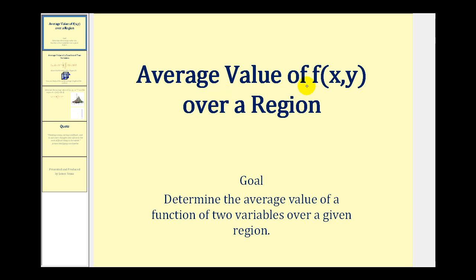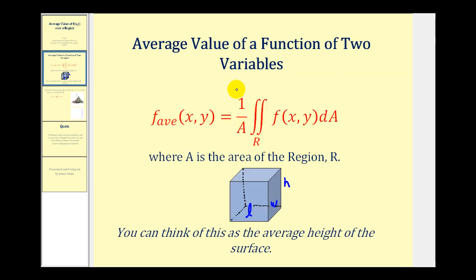Welcome to a lesson on the average value of f(x, y) over a region. The average value of a function of two variables is equal to one over A times the double integral over the region R of f(x, y), where A is the area of the region R.